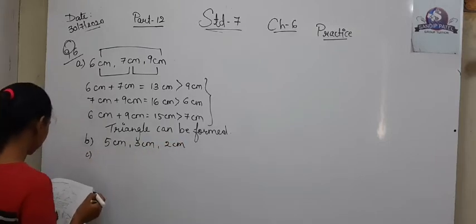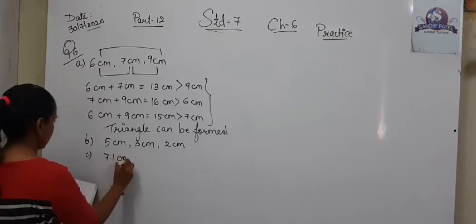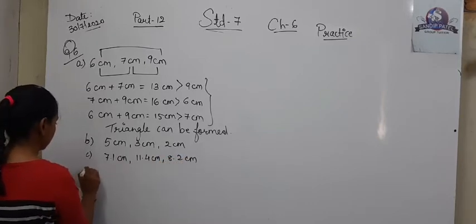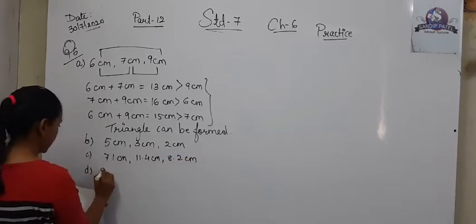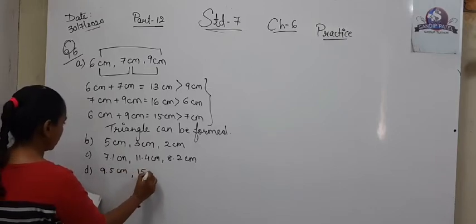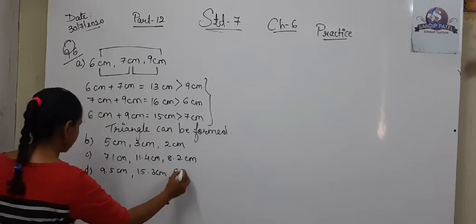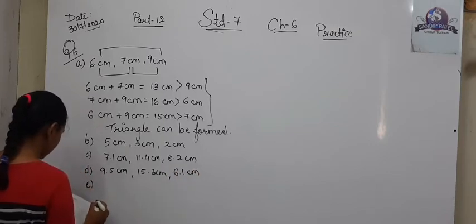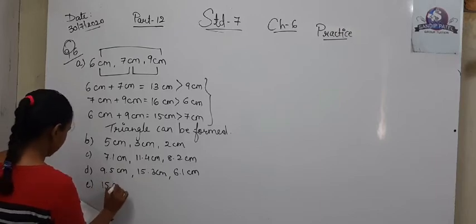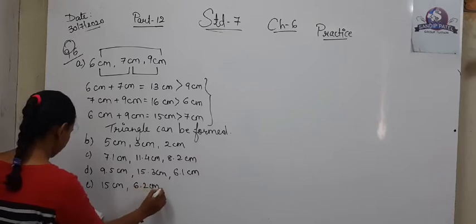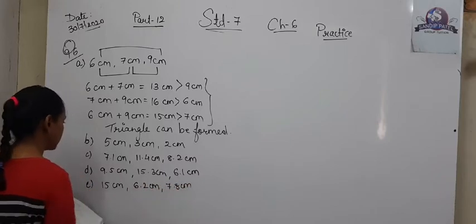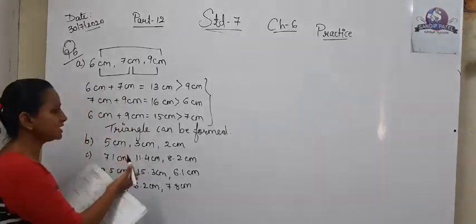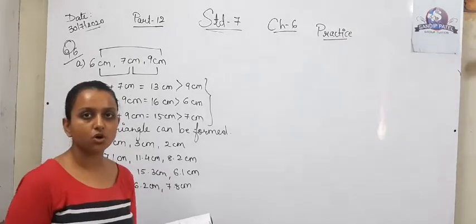Next set is 7.1, 11.4, and 8.2. Next is 9.5, 15.3, and 6.1. And the last set is 15 cm, 6.2 cm, and 7.8 cm. With these sides you need to find out whether the triangle is possible or not.